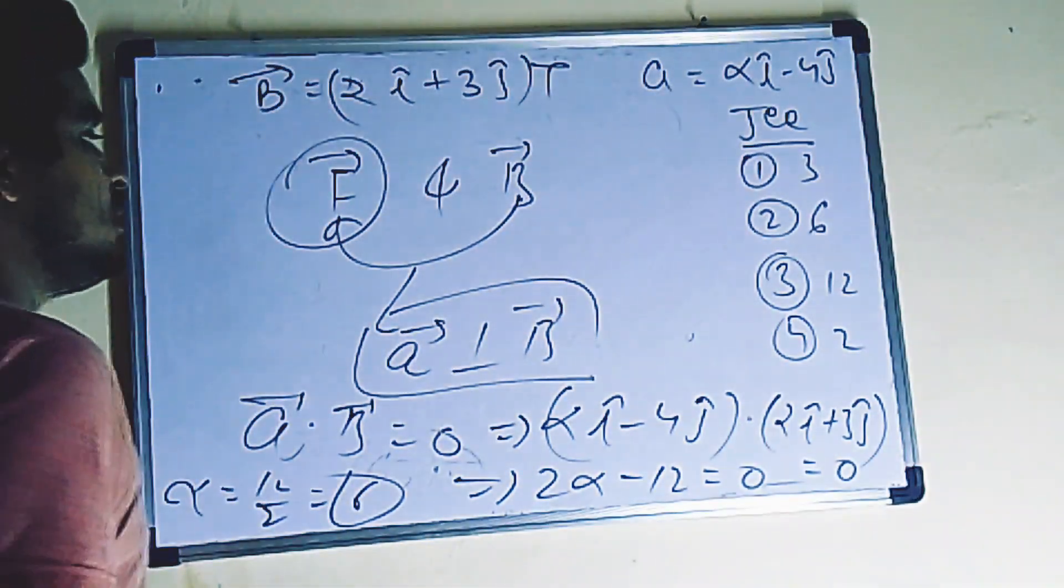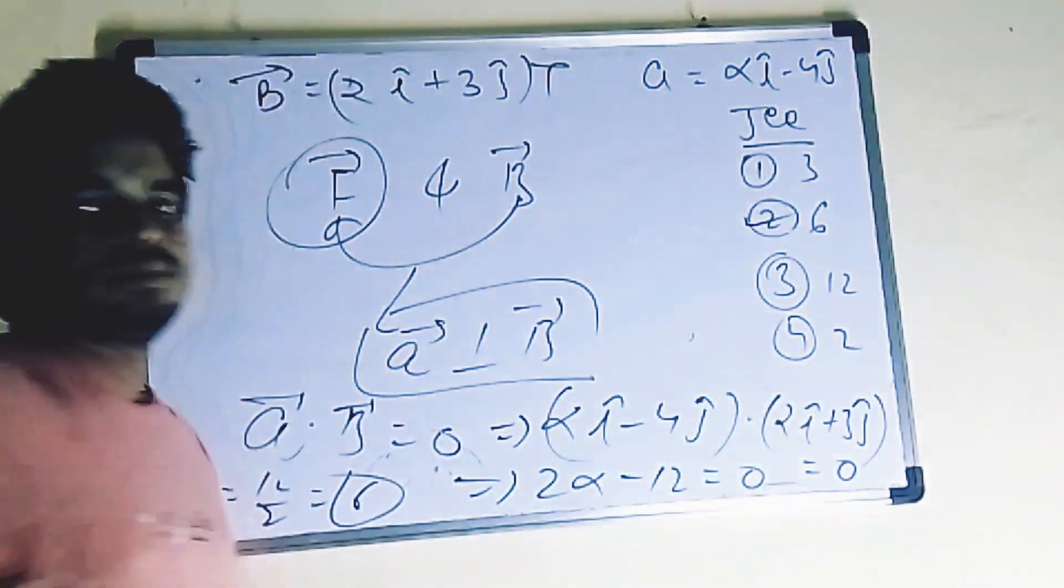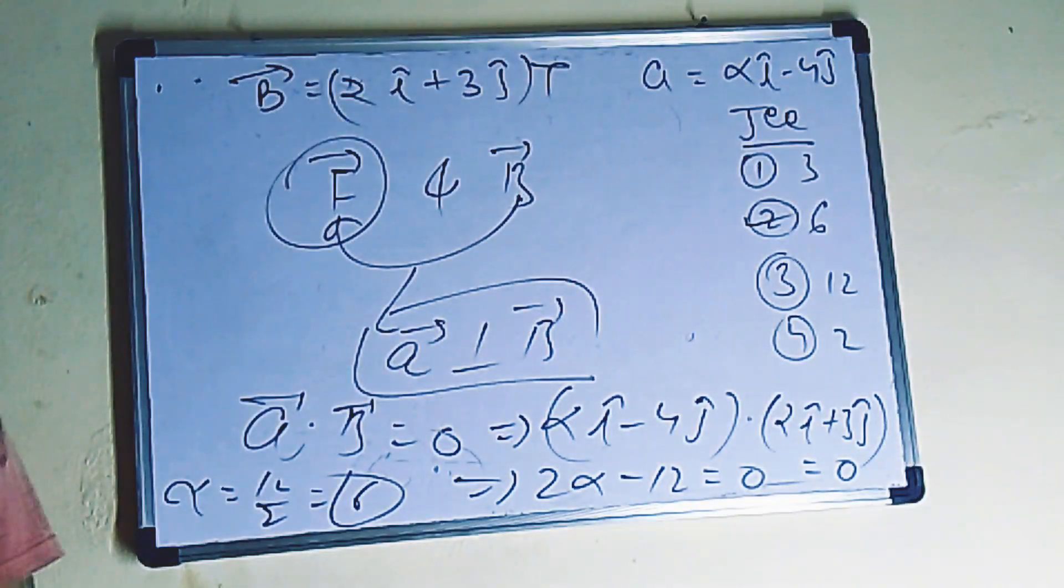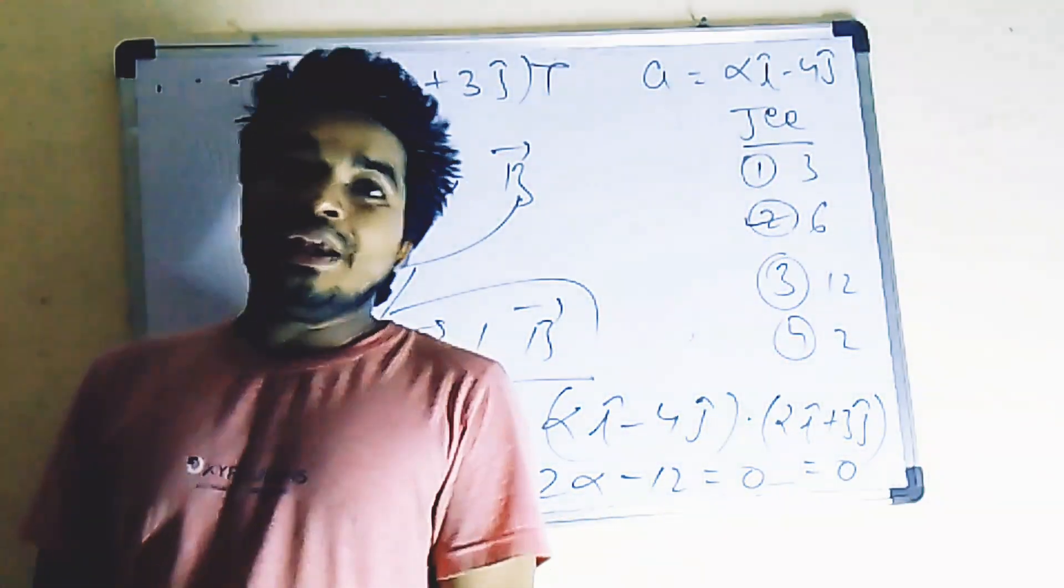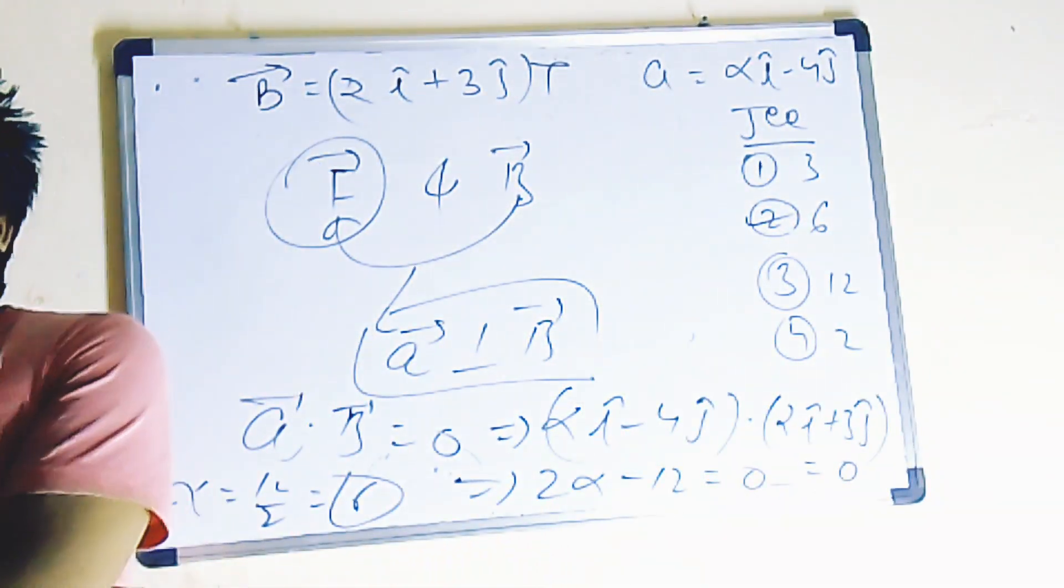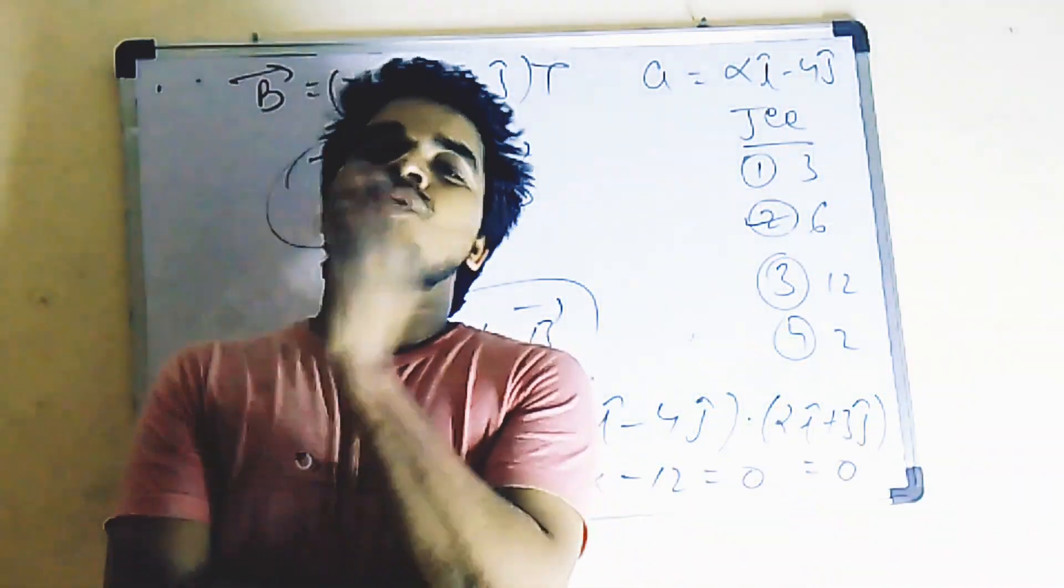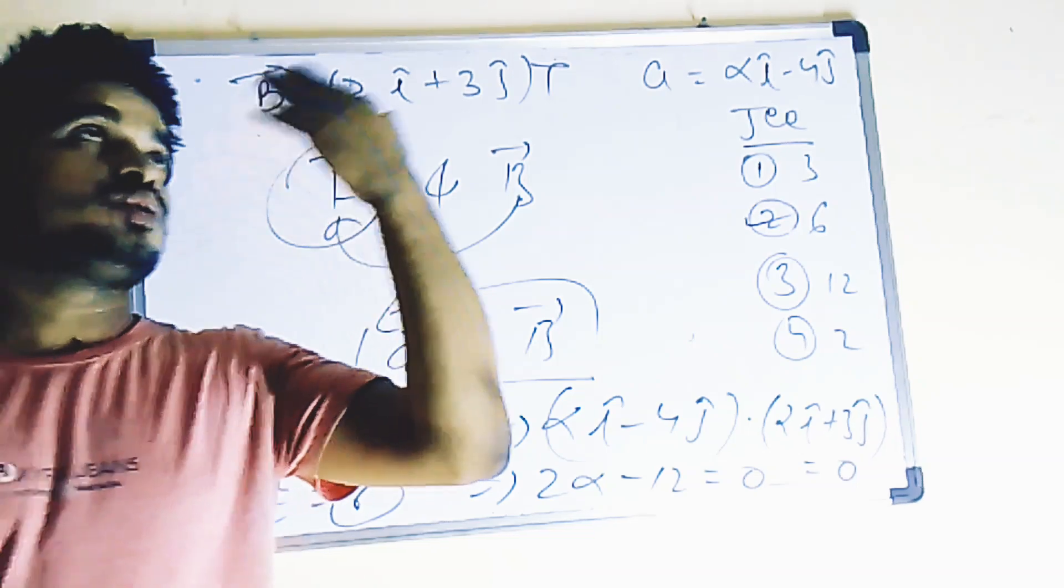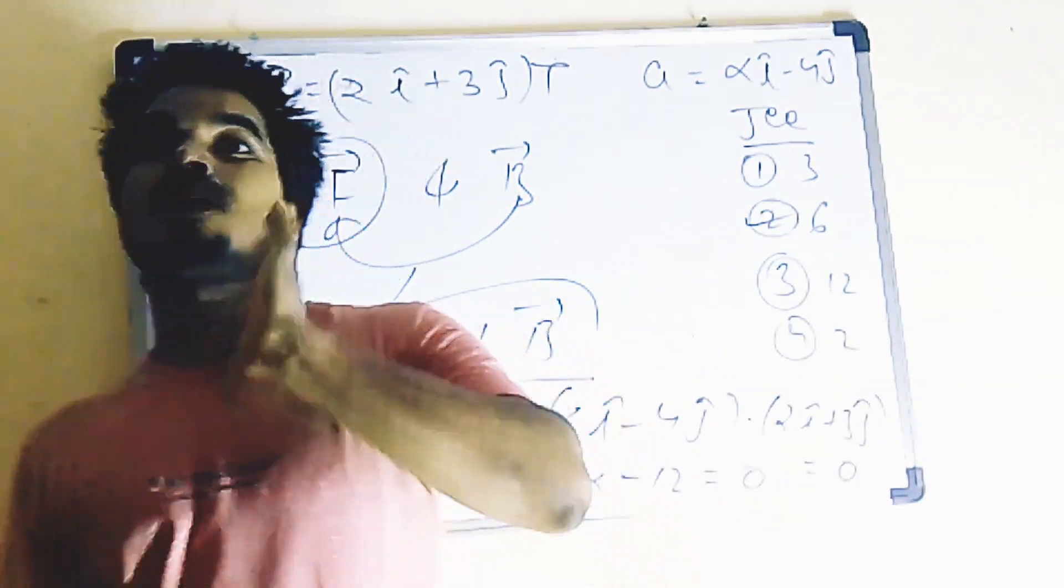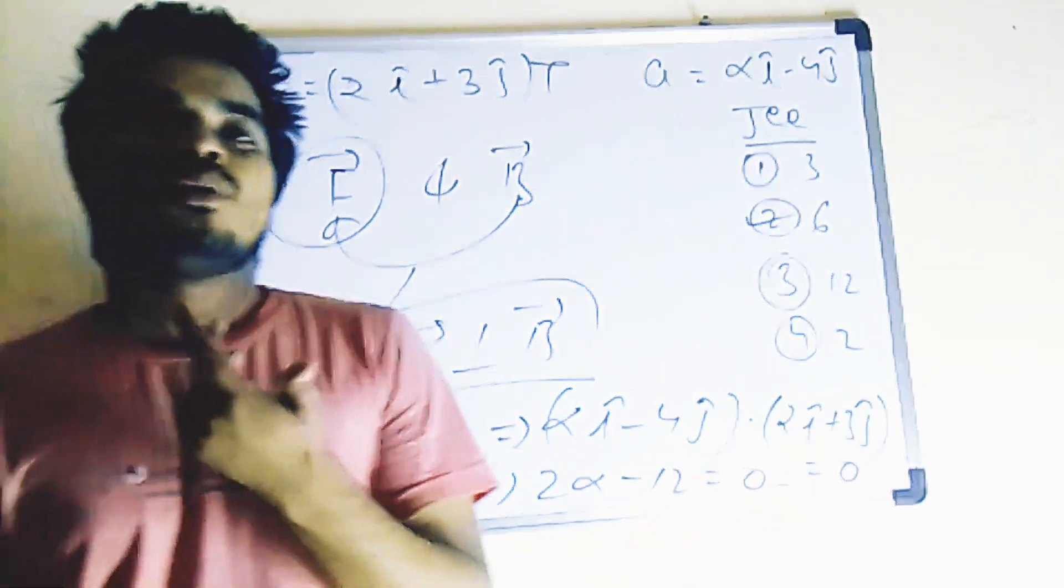So go with option 2: 6. Clear? So my students, if any question of physics from JEE Mains examination comes in front of you, you should know the approach, how to approach the question, so that you can reach the correct answer with accuracy. Thank you.